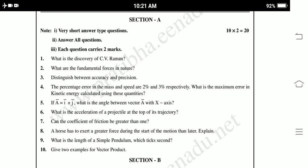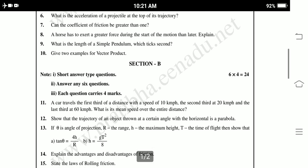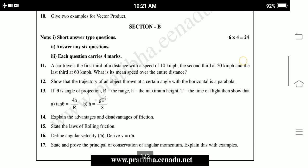These are the 10 questions in Section A, 10 into 20 marks. Section B has 8 questions given, we need to attend any 6. Each question carries 4 marks, 6 into 24 marks. These are short answer type questions.